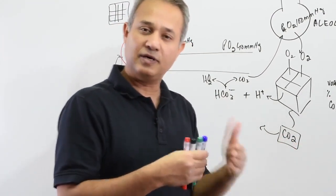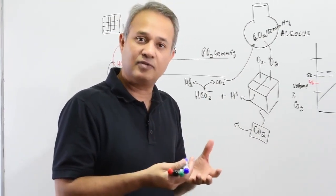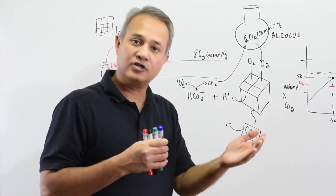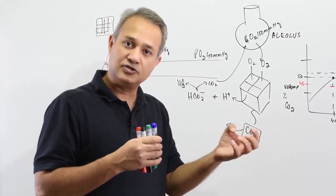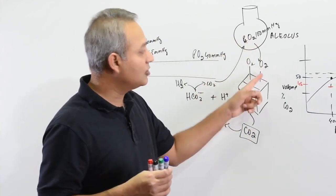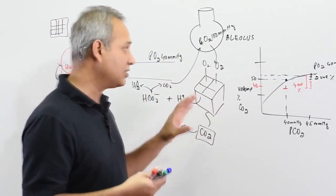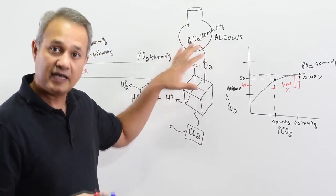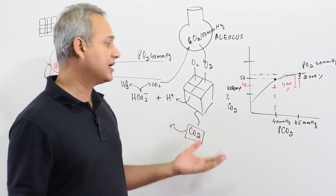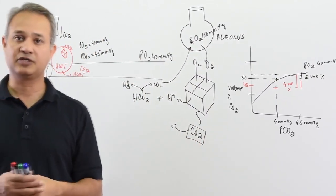Similarly, reduced oxygen pressure doubles the loading of carbon dioxide. This is one gas helping the other. Remember: in the Bohr effect, increased concentration of carbon dioxide favors the unloading of oxygen in the tissues. Here in the Haldane effect, increased concentration of oxygen favors the unloading of carbon dioxide in the lungs — and it doubles the unloading. This effect is called the Haldane effect. Thank you very much.